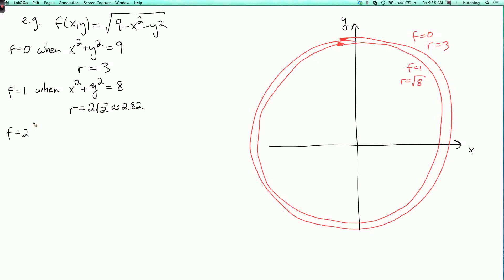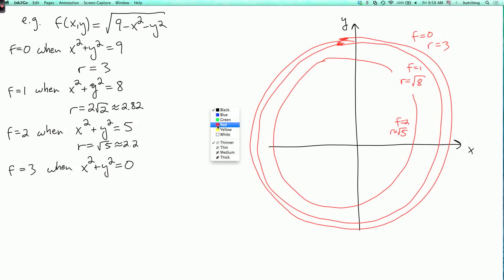Now f equals 2 when x squared plus y squared equals 5. So r equals the square root of 5, which is approximately 2.2. So this line is a little further away, so it's going to look something like this. So here's f equals 2, and r equals the square root of 5. And finally, f equals 3 when x squared plus y squared equals 0. That is to say, it's the origin. So that level set where f equals 3 is just a single point. f equals 3 at the origin.